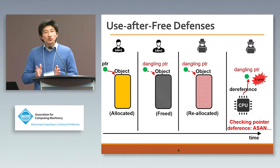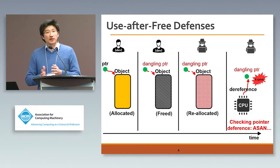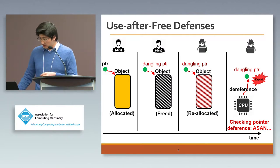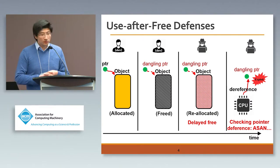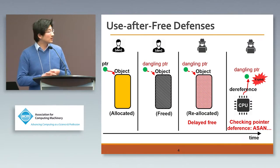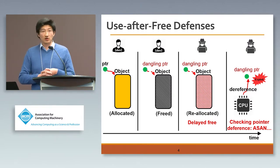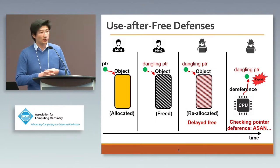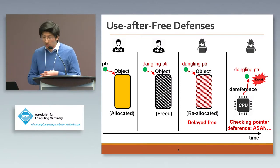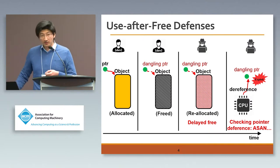Instead of doing that, some alternative research work proposes delayed free — can we avoid defense at the dereference stage? Delayed free says: even if you have dangling pointers pointing to objects, what if those dangling pointers cannot point to things under the attacker's control? This kind of approach mitigates the problem. However, with limited memory you still have to free those objects eventually, and reallocated objects could still occupy locations pointed to by dangling pointers. This mitigation is used to some extent by browsers from Microsoft.